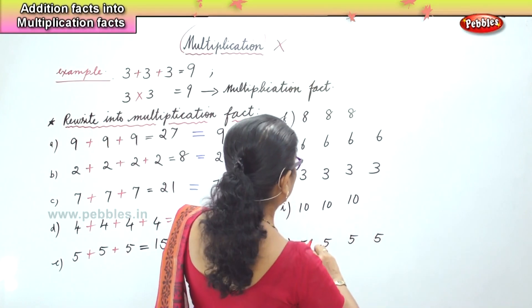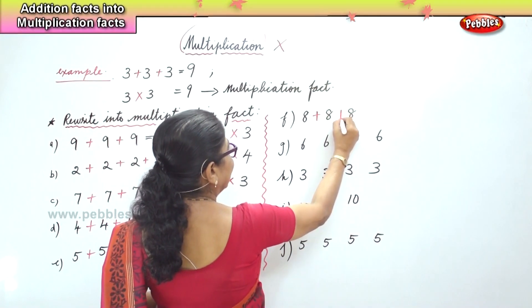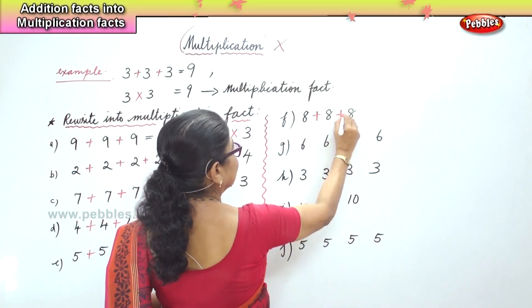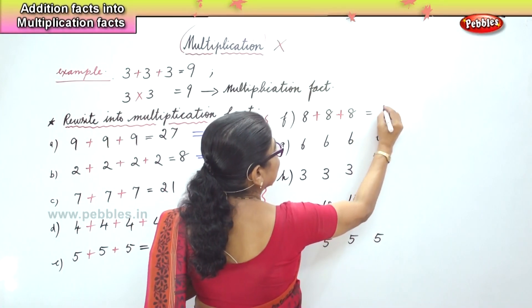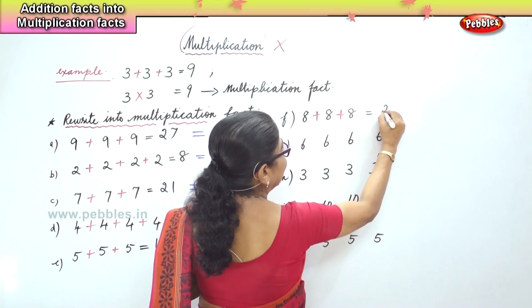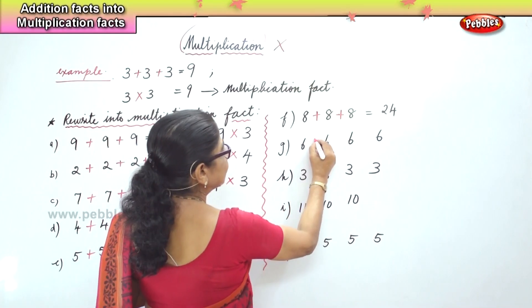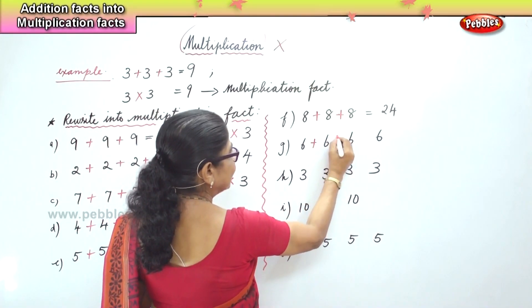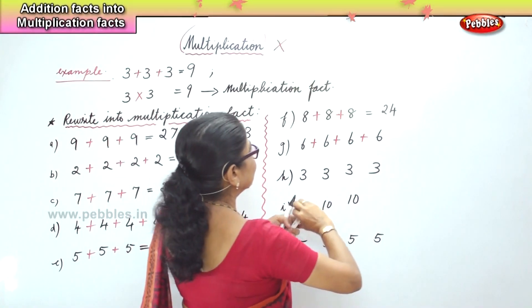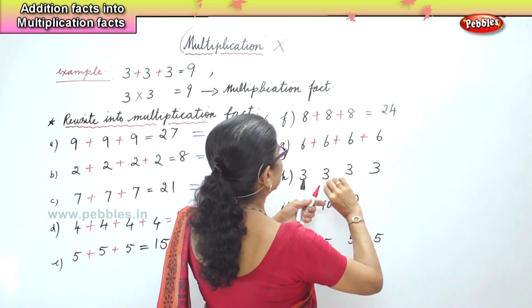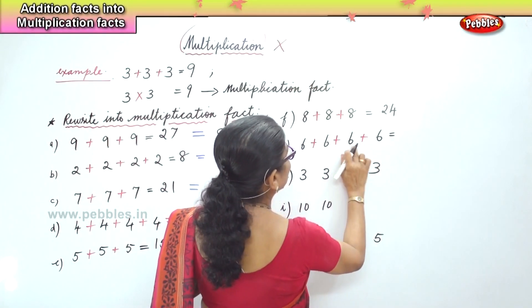Okay, now: 8 plus 8 plus 8 equals twenty-four. 6 plus 6 plus 6 equals twenty-four.